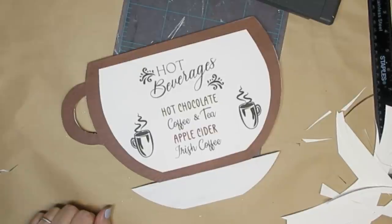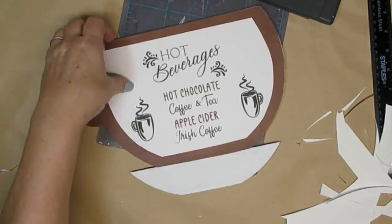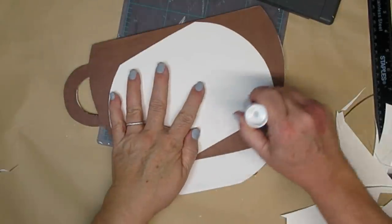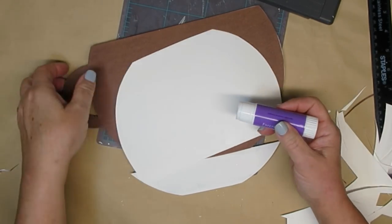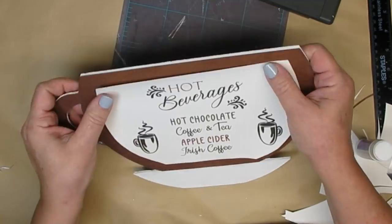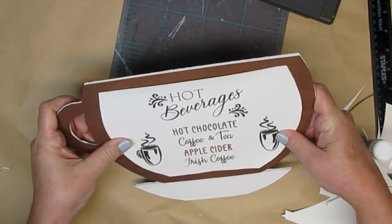This is a printable that I created. It will be available on my website - the link is down in my description box. I printed it out on white cardstock and then cut out the shape of the cup but just about an inch smaller all the way around. As you can see here, I'm just using a glue stick again to apply it.